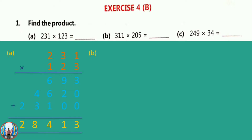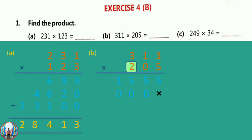Question number B: 311 into 205. We will multiply 311 into 5, answer is 1555. Now we will multiply by 0. If the 0 is confusing, we can put a cross in the ones place because we are multiplying by the tens place. 311 into 0 is 0. Now 311 into 2 — we are multiplying by the hundreds place, so we put two crosses in the ones and tens place. We add all answers and the answer is 63,755.